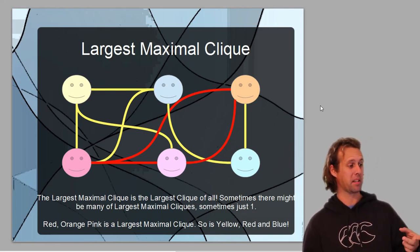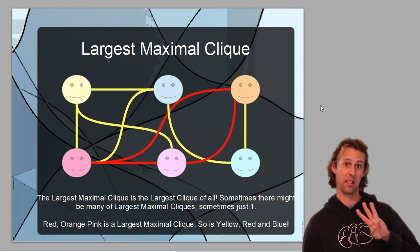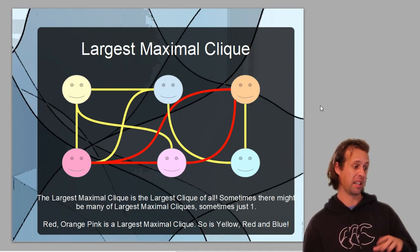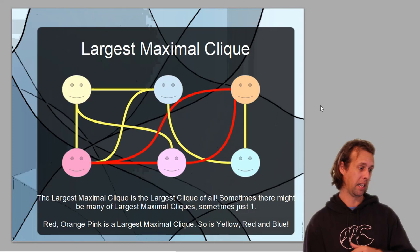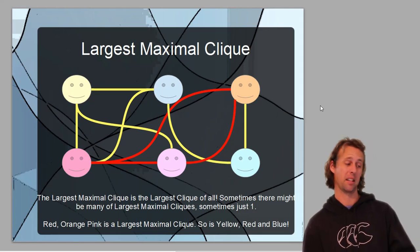As it happens, in this particular graph here, the largest maximal clique is this one here that we've got. Or the other one, so it's a three-member clique. Once again, there can be ties for the largest maximal clique. But yellow, red, and blue is one of the largest maximal cliques for this particular chart.